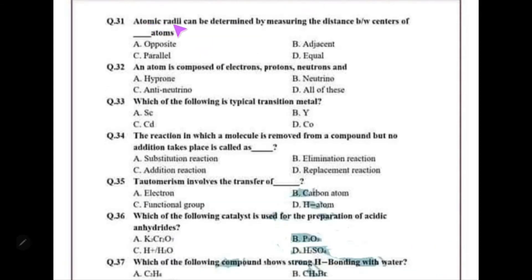Atomic radii can be determined by measuring the distance between the centers of adjacent atoms.